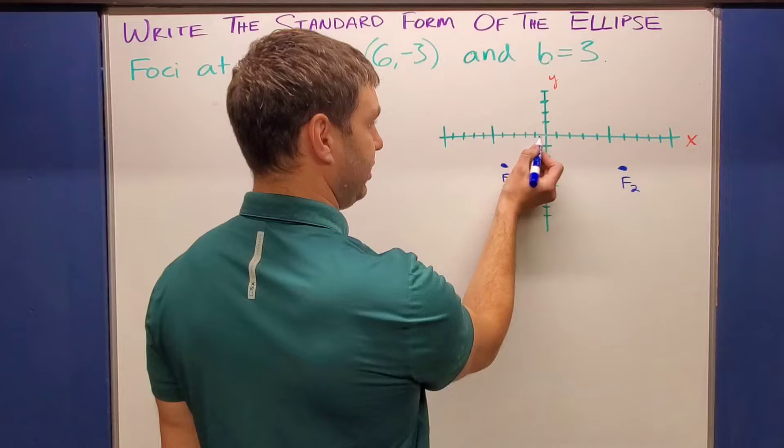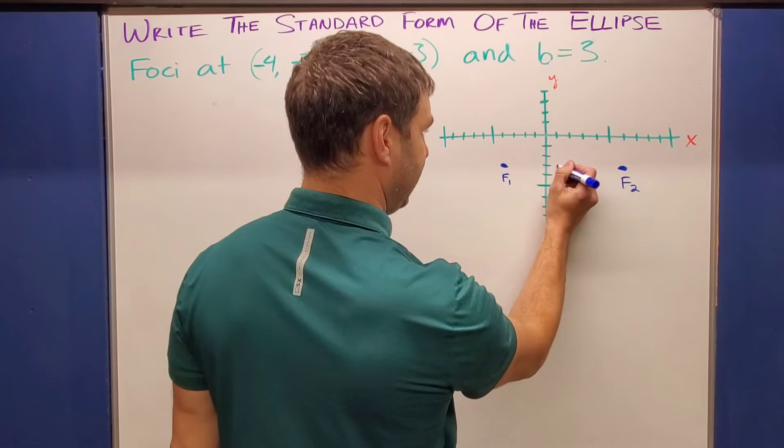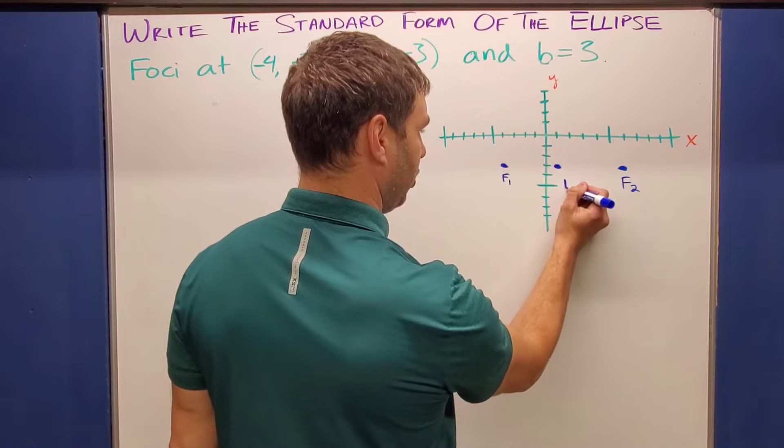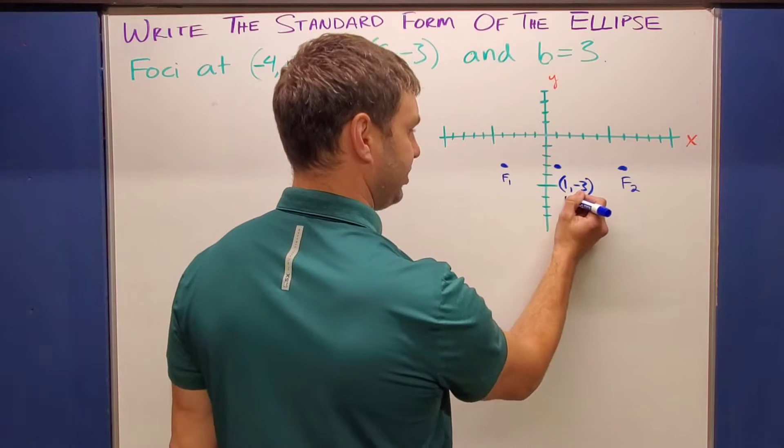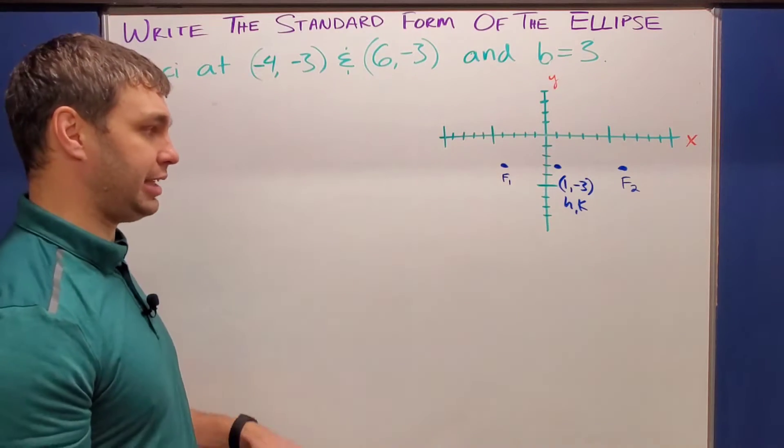So if I do that one, two, three, four, five, right there at one down to negative three. So I think one negative three will be my center. Remember that's my H and K values. And we're going to use that here in a second.